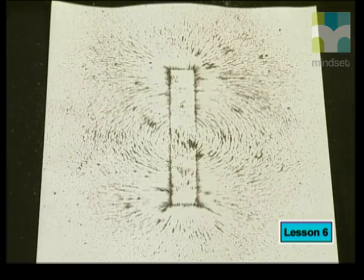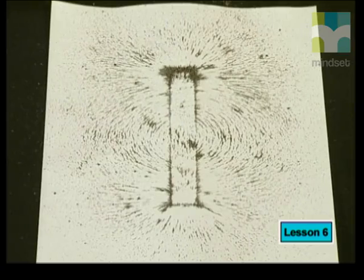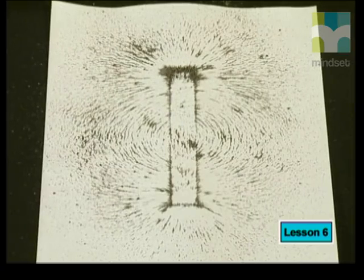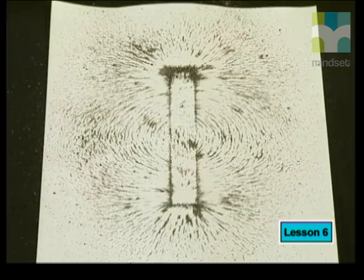When we bring iron filings close to a bar magnet, a pattern forms around the magnet. This pattern shows not only the shape of the magnetic field but also its strength.